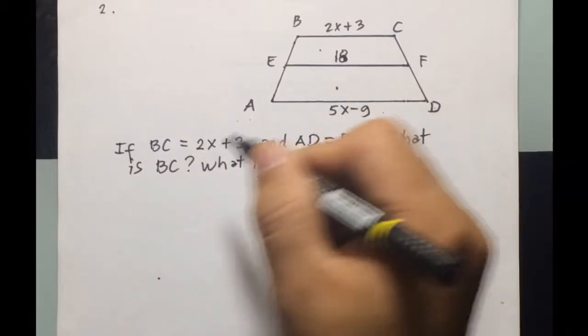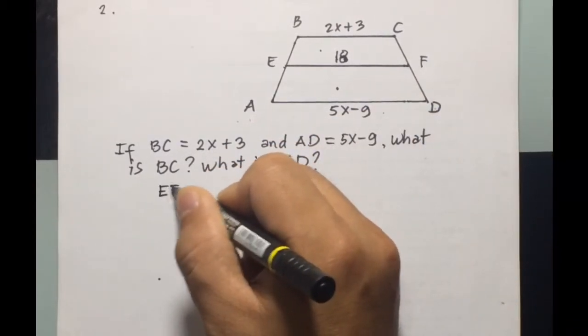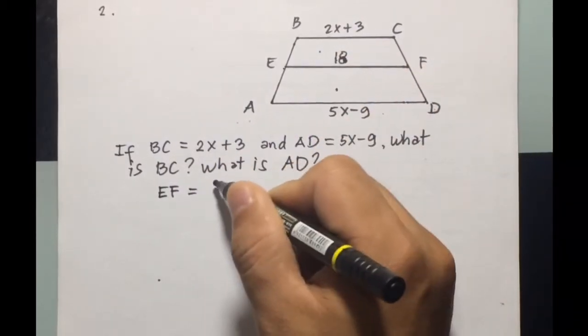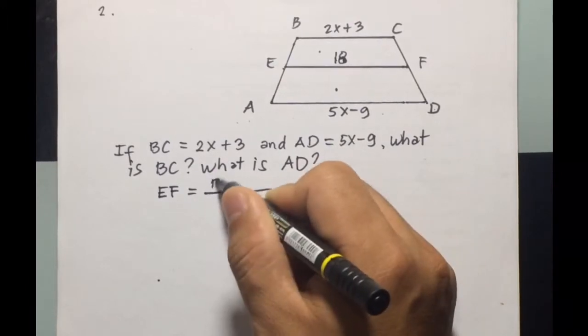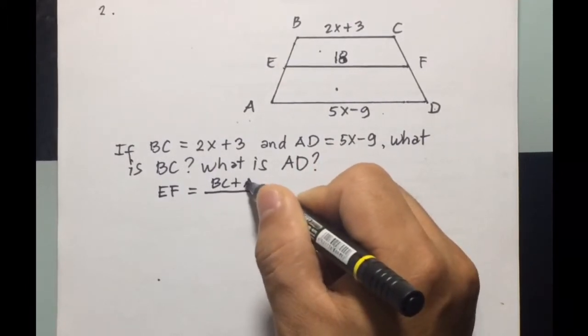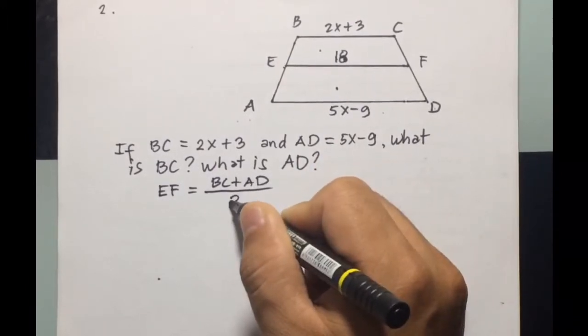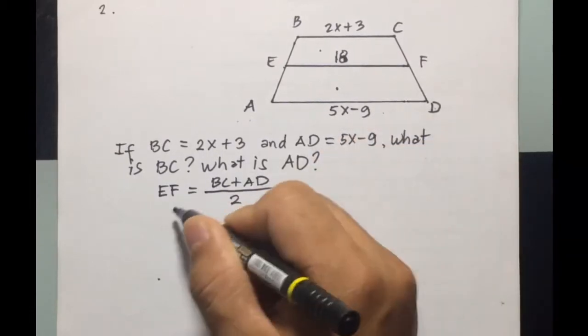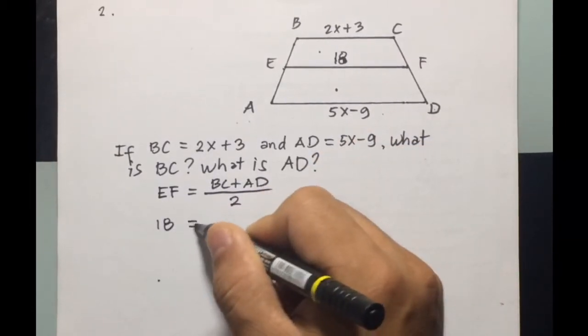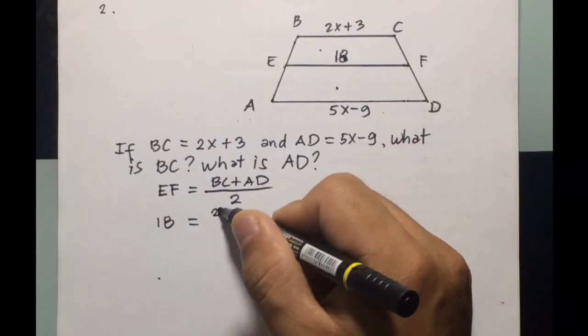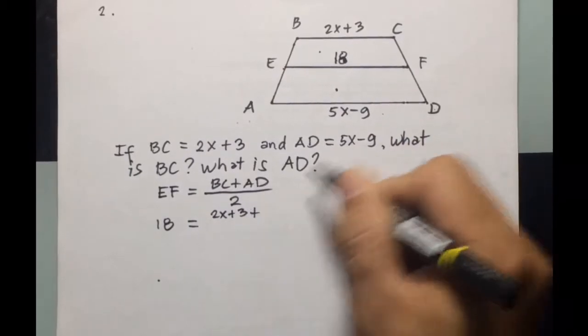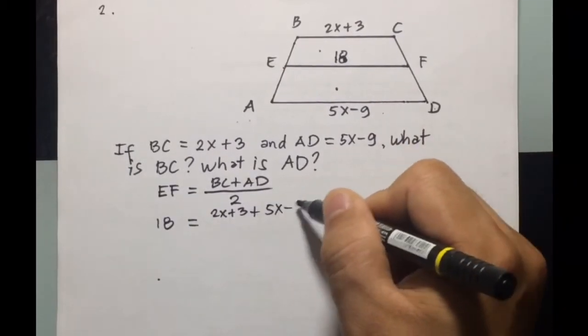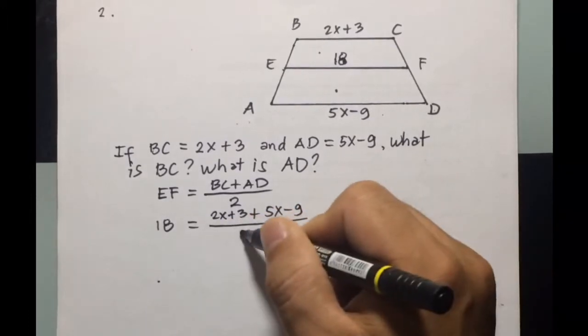So we're going to have our solution as EF equals BC plus AD divided by 2. So EF is 18, then this will be equal to BC, 2X plus 3, then plus AD, 5X minus 9, divided by 2.